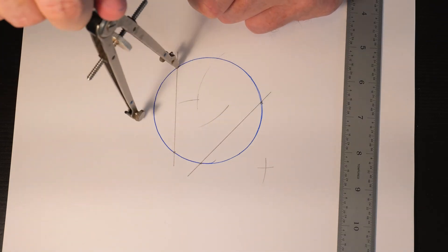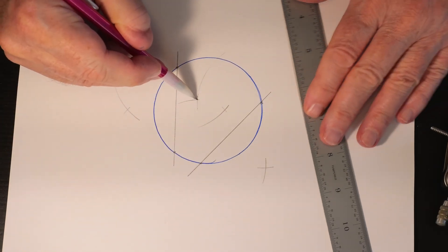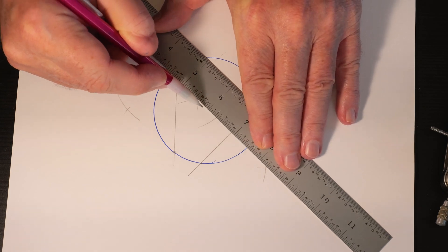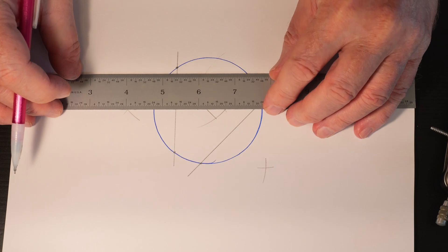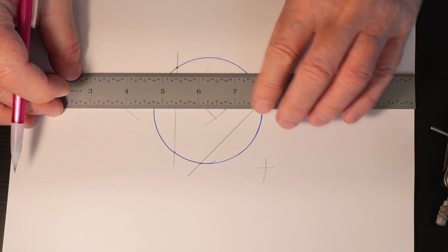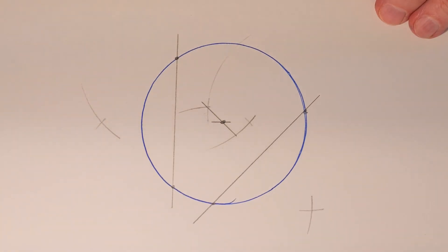So if we connect the first pair and connect the second pair of arcs, there is our center point.